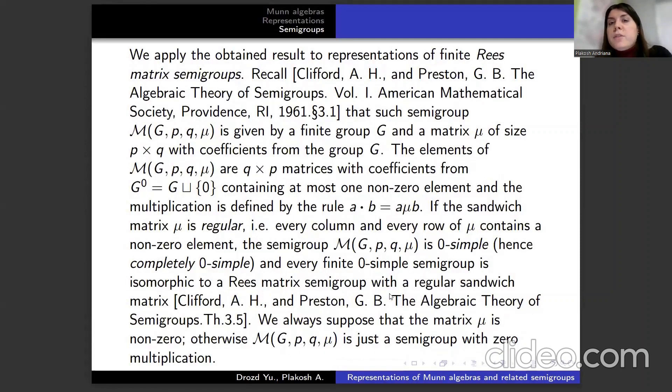We apply these results for representations of finite Rees matrix semigroups. Recall from Clifford and Preston's paper that such semigroups are given by finite group G and m×n matrix μ with coefficients from the group G. The elements of M are q×p matrices with coefficients from G∪0, containing at most one non-zero element, and the multiplication is defined by the rule.